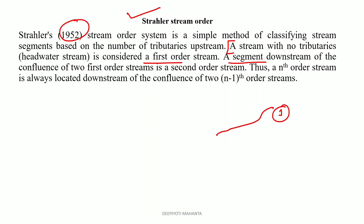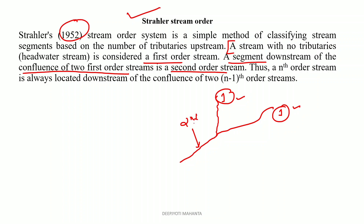A segment downstream of the confluence of two first order streams is a second order stream. If two first order streams meet at a point, the next stream will be a second order stream. Similarly, if you have a second order stream meeting another second order stream, they will form a third order stream.